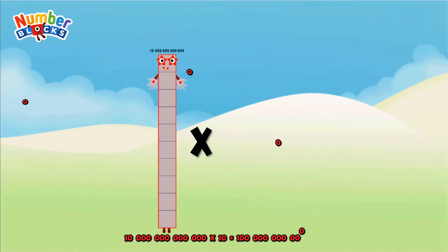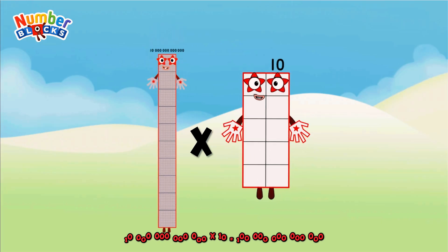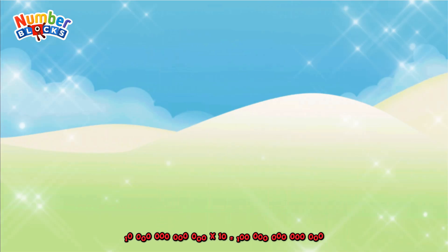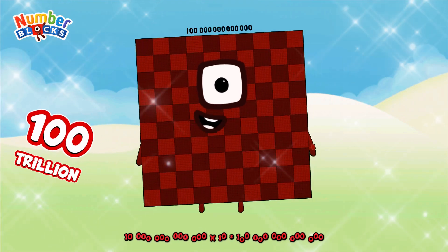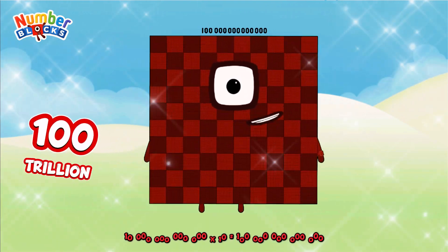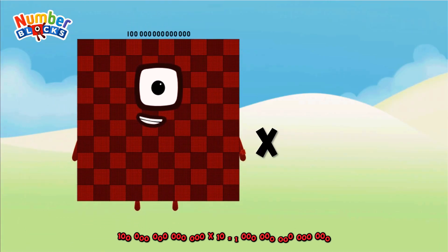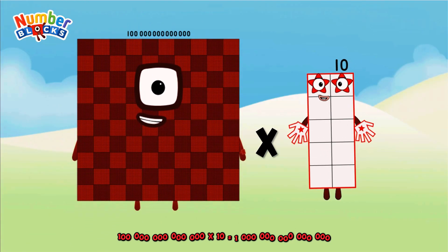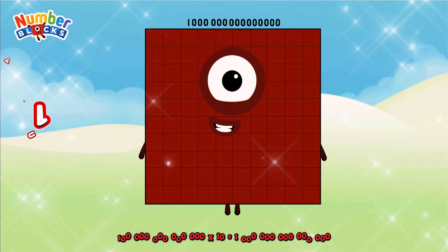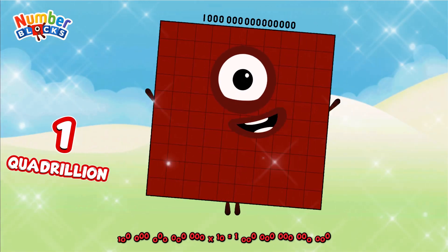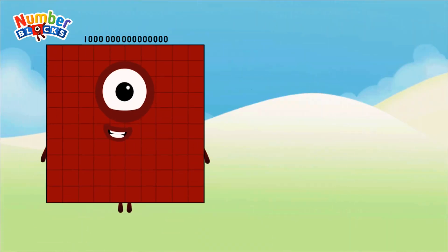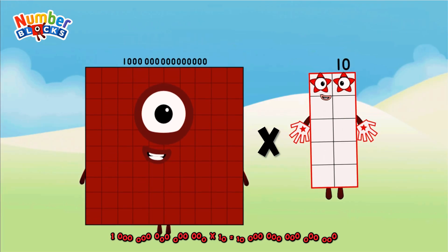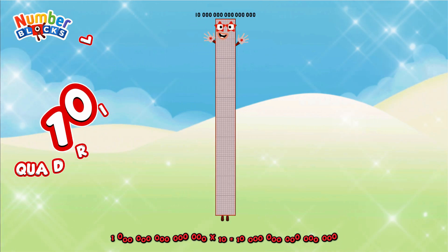10 trillion multiplied by 10 equals 100 trillion. 100 trillion multiplied by 10 equals 1 quadrillion. 1 quadrillion multiplied by 10 equals 10 quadrillion.